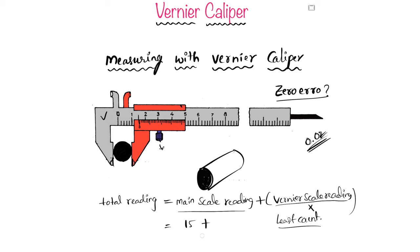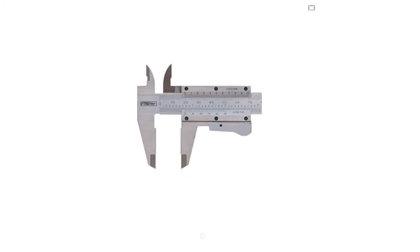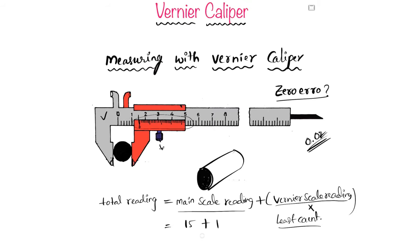The vernier scale reading is taken where a graduation on the vernier scale coincides with any graduation on the main scale. Because this is a diagram it may not be perfectly clear, but on an actual vernier caliper one graduation will definitely coincide. Count the number of divisions from zero on the vernier scale — let's say it is 17 divisions. So the vernier scale reading is 17 × 0.02. The total reading is 15 + (17 × 0.02) = 15.34 mm.